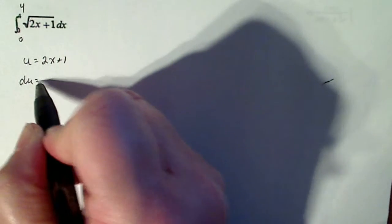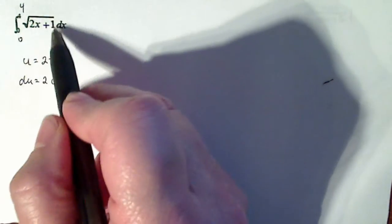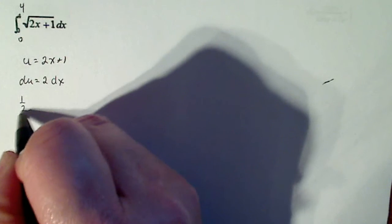So du is equal to 2 dx and I just have 2x plus 1, so that'll be my u and my dx looks like it'll be one half du.